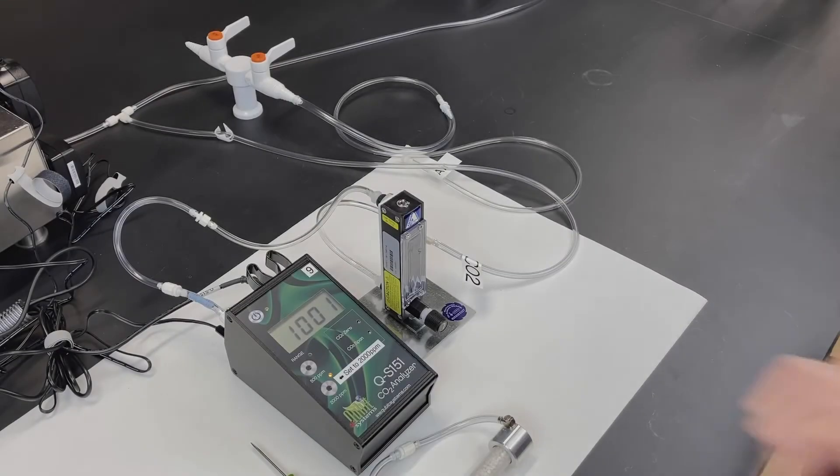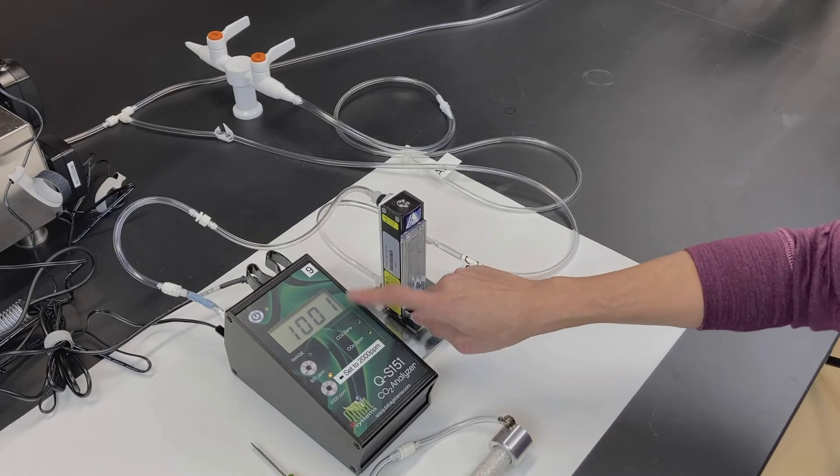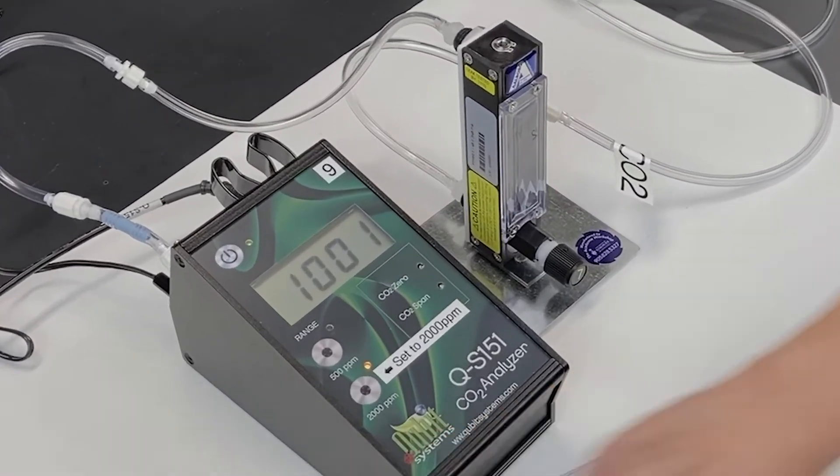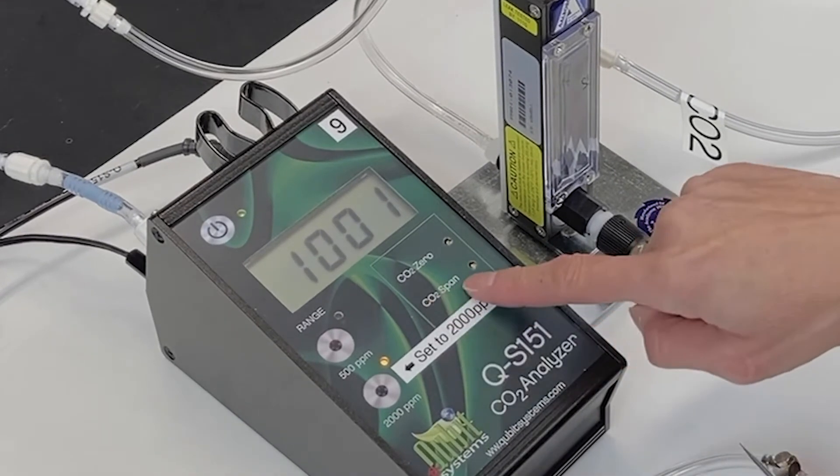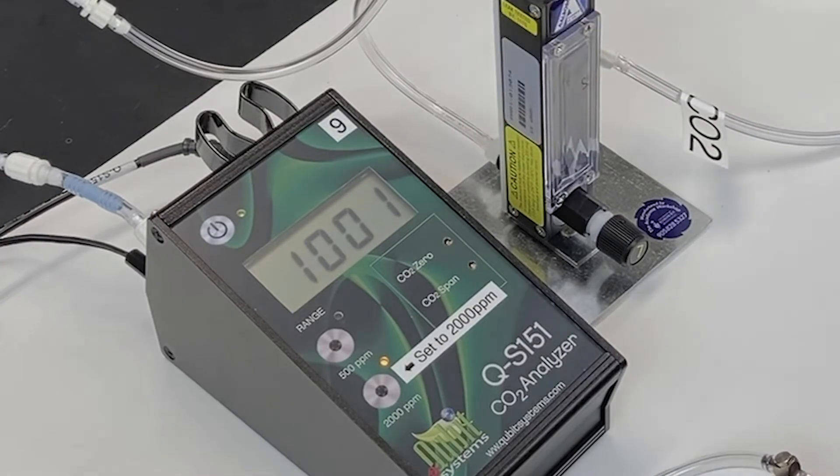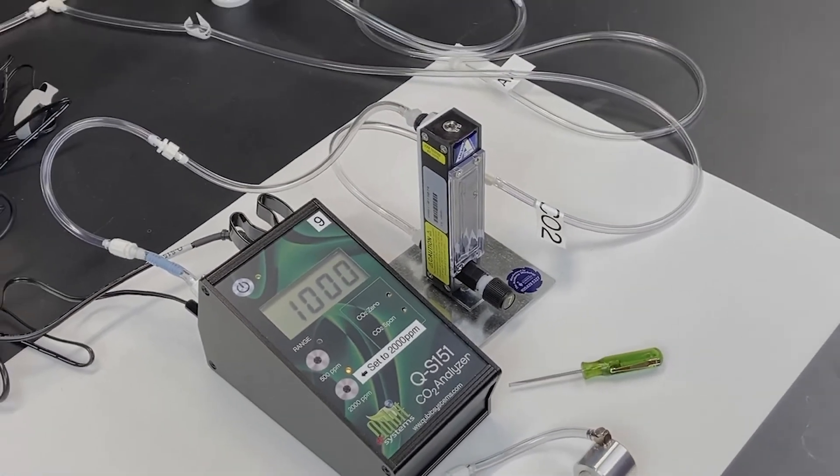Here the reading has stabilized to 1001 parts per million, which is close enough. If the reading is significantly higher or lower than 1000 parts per million, use the screwdriver and the carbon dioxide span screw to adjust it to 1000 parts per million.